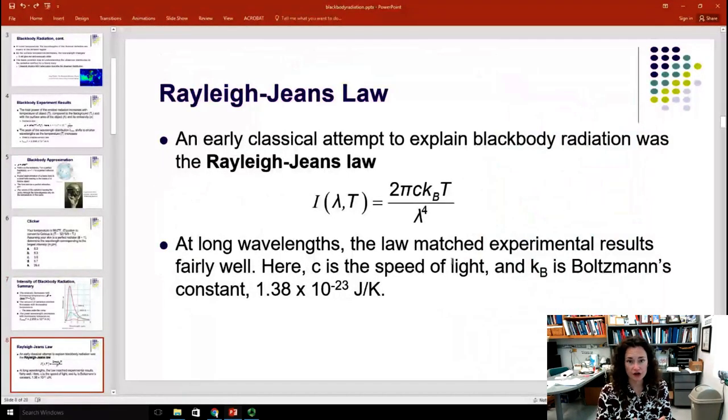Now, there was an earlier classical attempt to explain black body radiation. They tried to have a theory that gave them a curve that matched the black body radiator curve. But it didn't do so well. That attempt was the Rayleigh-Jeans Law. Here, the intensity I, which is a function of wavelength and temperature, is equal to 2πc k_B T over λ to the fourth. Here, yet again, C is the speed of light, 3 times 10^8 meters per second. k_B is Boltzmann's constant, 1.38 times 10^-23 joules per Kelvin.